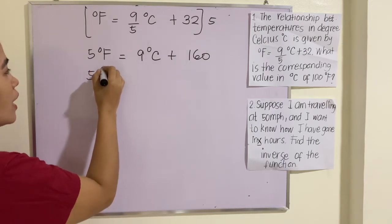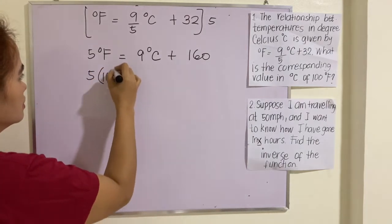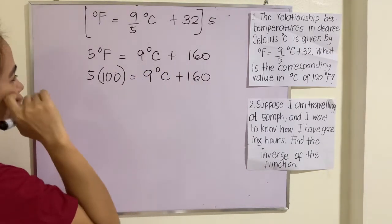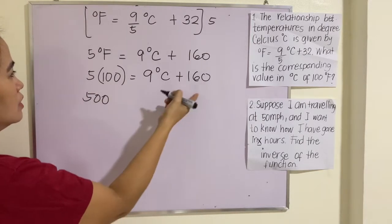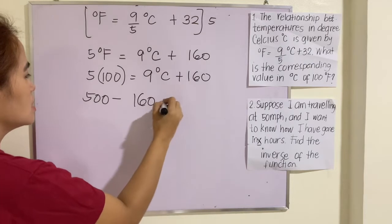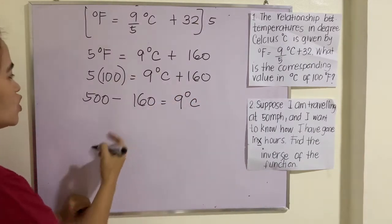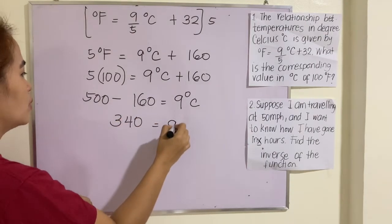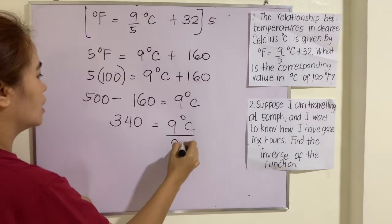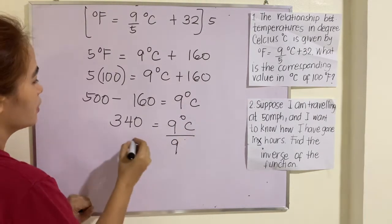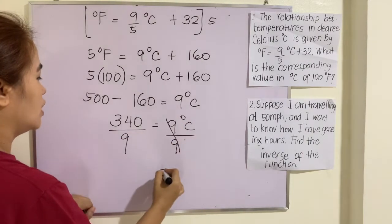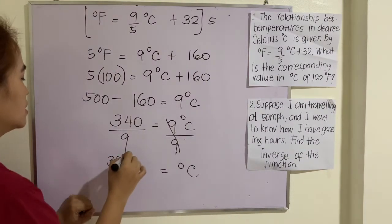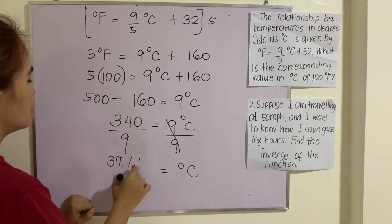So that is 5(100) = 9°C + 160. Solving for degree C, we have 500 - 160 = 9°C. Subtracting it, we have 340 = 9°C divided by 9. So this will be equal to 37.78°C.